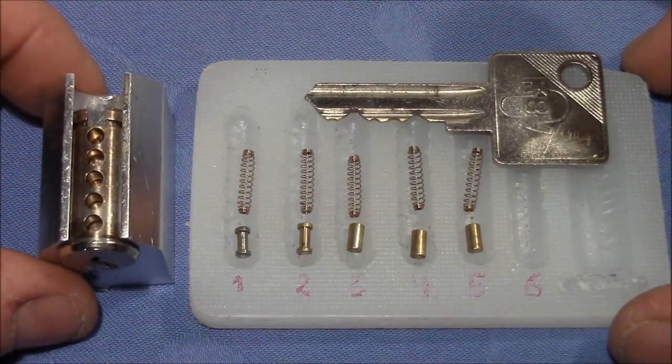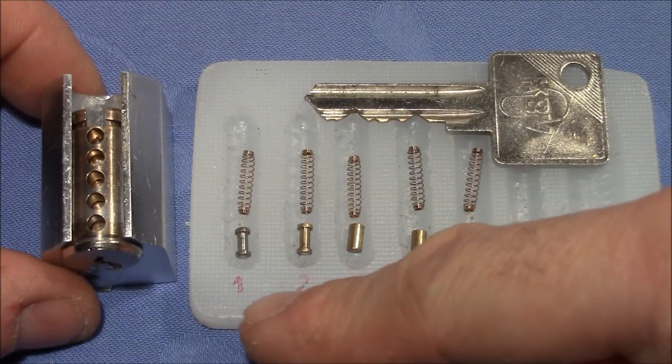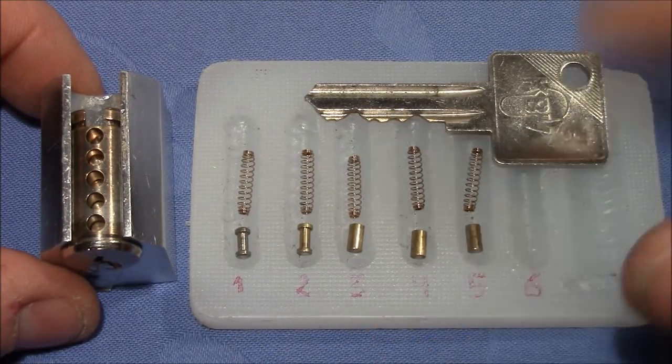So here's the lock taken apart and we can see that we've got spools in 1 and 2 and standards in 3, 4 and 5.